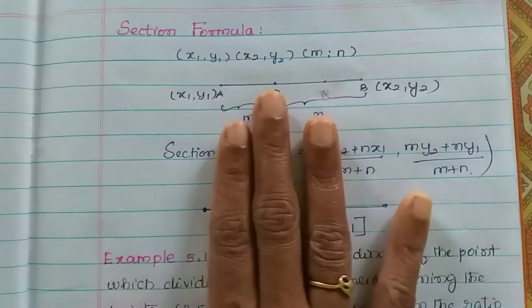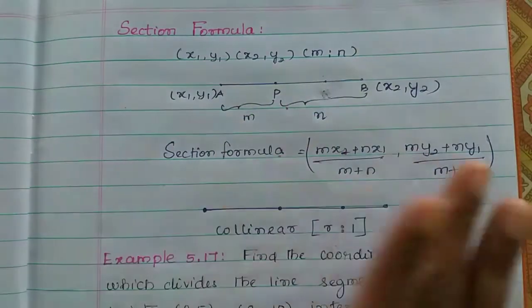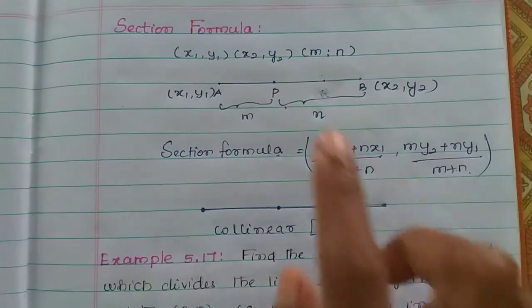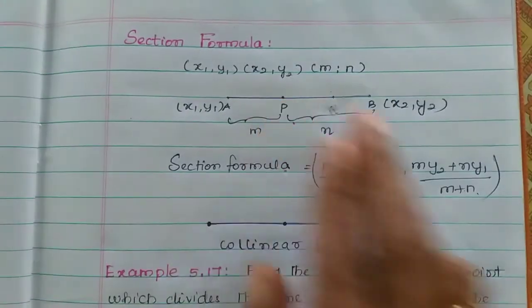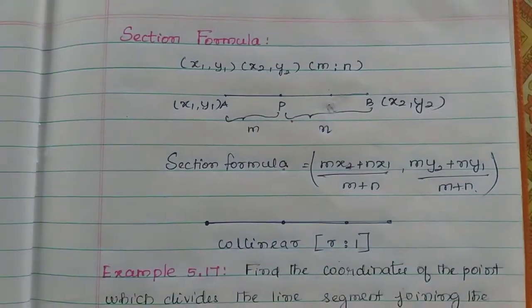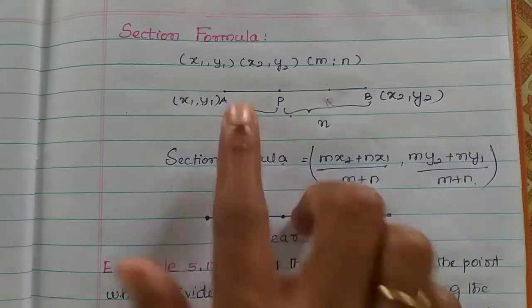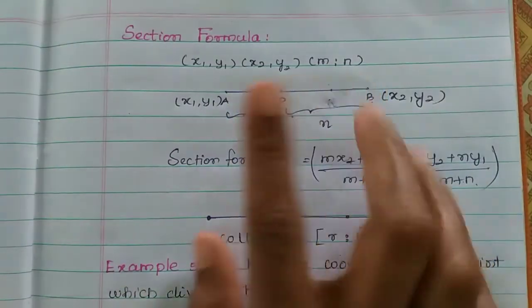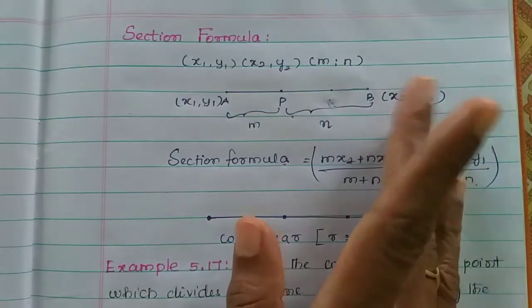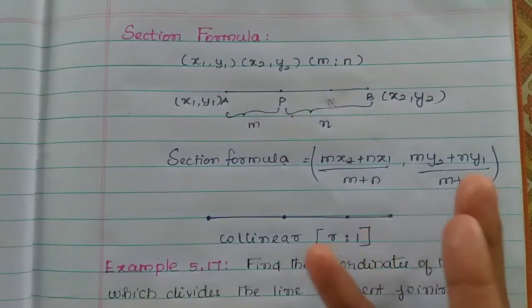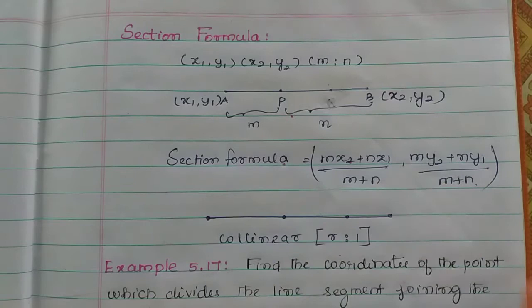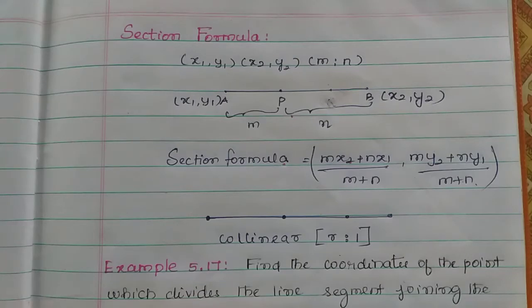In this section, the point divides the line. For example: 2 is to 1, 1 is to 2, 3 is to 2, 4 is to 1. That ratio is given, and we can use the section formula.